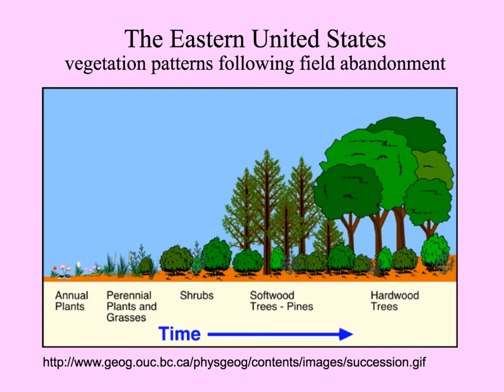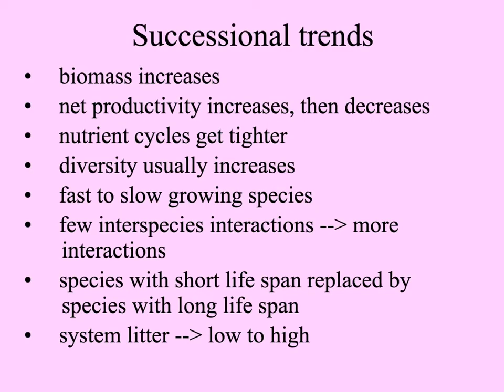Here's a diagram of the things that happen over time on an abandoned field. First, annuals like weeds come in. They're gradually joined by and then replaced by perennial plants and grasses, which are host to tiny shrub seedlings that get bigger and bigger, eventually crowding them out. Then seedlings of fast-growing conifers come in — softwood trees — which then have small seedlings and saplings of hardwood trees, which eventually shade them out and take over for the climax.